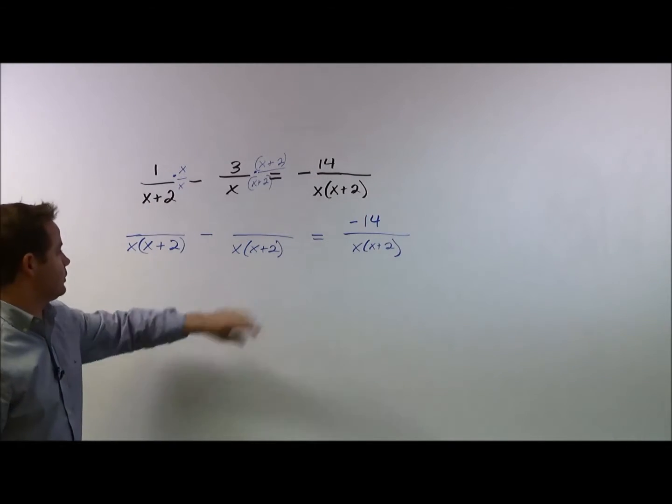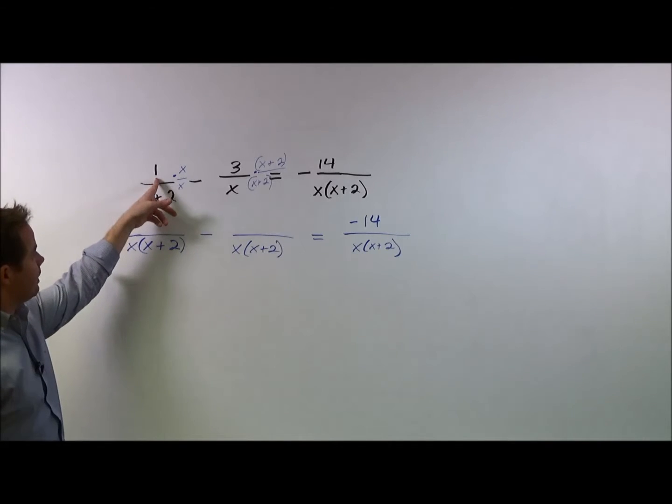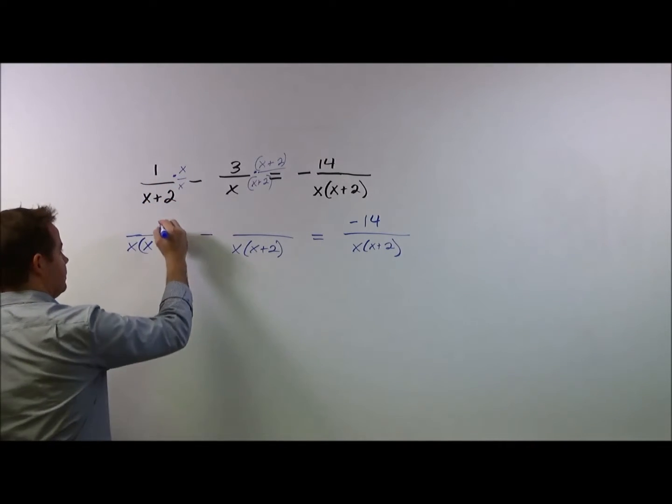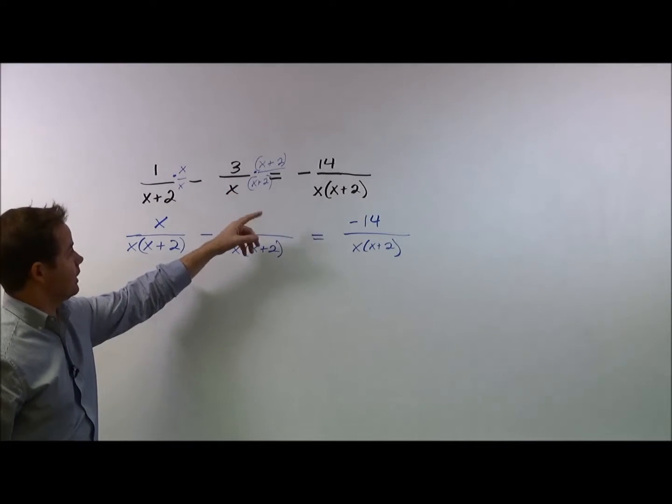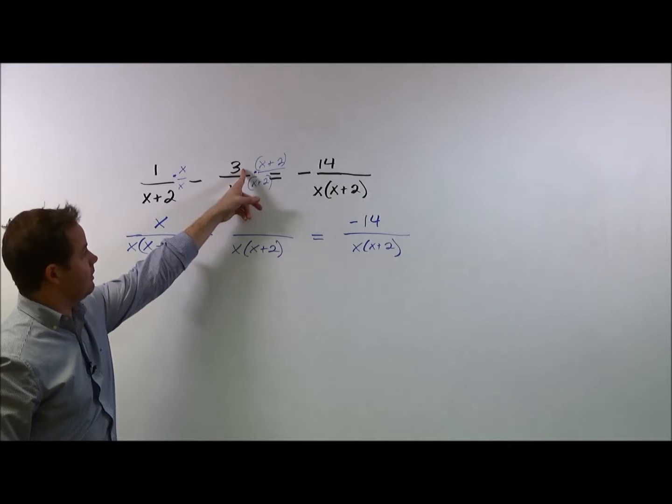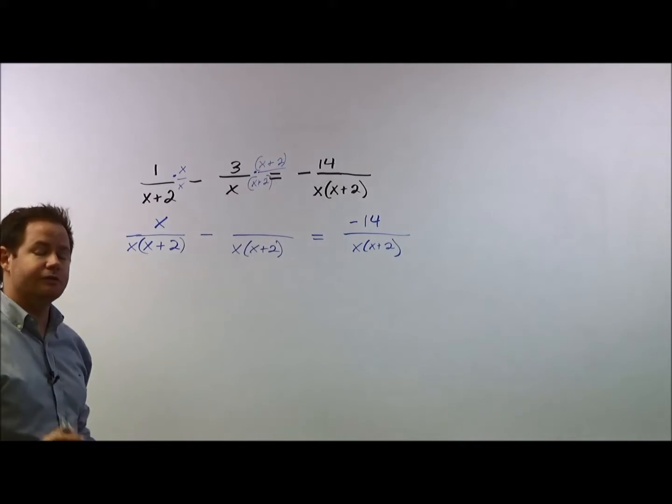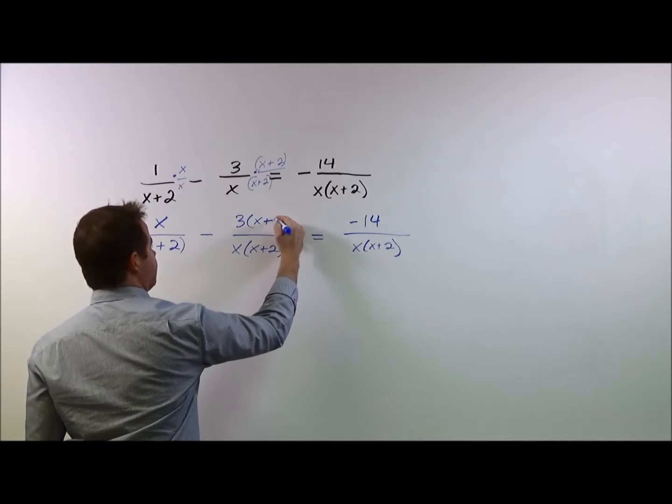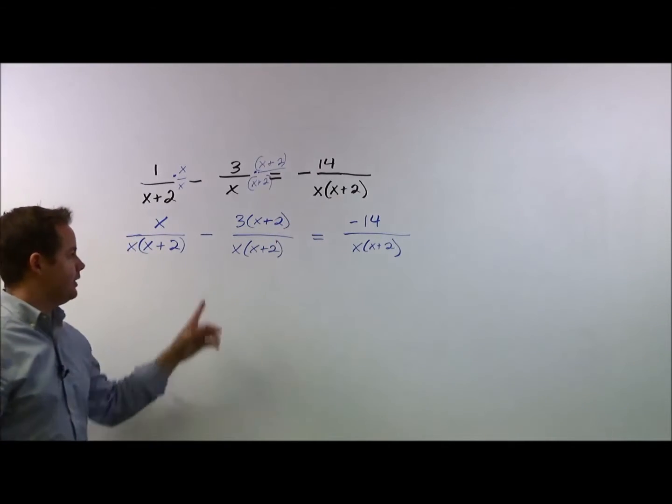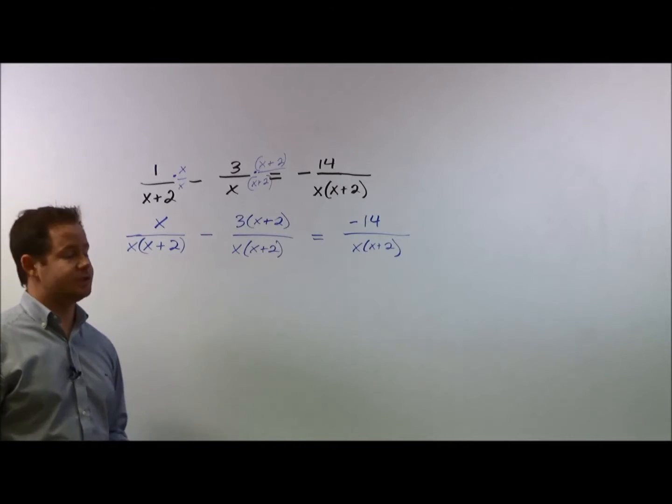Now let's take a look at these first two. So here, when I multiply my numerator times x, 1 times x will give me x. And then for the second fraction, when I multiply this times x plus 2, for right now we're going to write it out as just 3 times x plus 2. We'll talk about how the negative is going to play into it in just a moment.